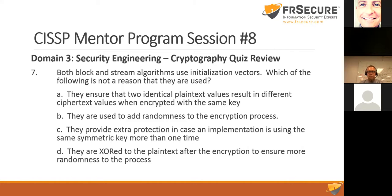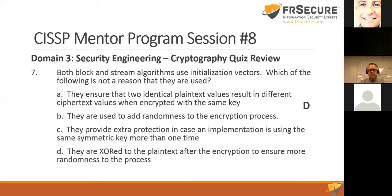Both block and stream algorithms use initialization vectors. Which of the following is not a reason they are used? They ensure that two identical plain text values result in different ciphertext values when encrypted with the same key — that's true. They're used to add randomness to the encryption process — also true. They provide extra protection in case an implementation is using the same symmetric key more than one time — that's also true. They are XORed to the plain text after the encryption process — that's not true; it's not after. So D is the wrong answer.